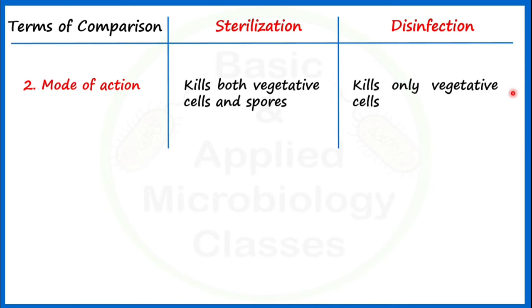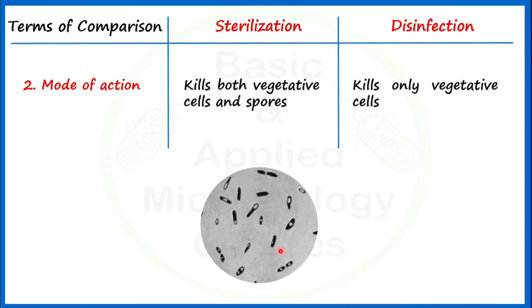Let's understand the concept of vegetative cells and spores with the help of this picture. This picture is showing us the microscopic view of vegetative cells, spores, and spore-forming bacterial cells. These rod-shaped forms of bacteria are called vegetative cells.